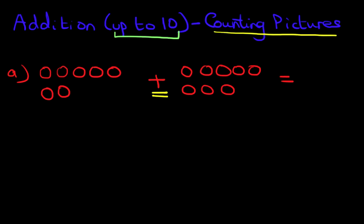So how many red circles are there? Let's count them. Count with me. 1, 2, 3, 4, 5, 6, 7. Okay.